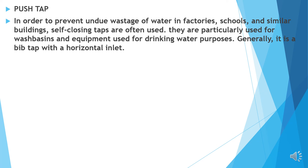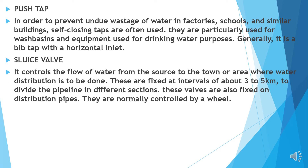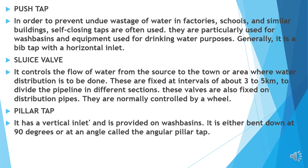Push tap: in order to prevent undue wastage of water in factories, schools and similar buildings, self-closing taps are often used. They are particularly used for washbasins and equipment used for drinking water. Generally it is a bib tap with a horizontal inlet. Sluice valve: controls the flow of water from the source to the town or area when water distribution is done. Fixed at intervals of 3 to 5 km to divide the pipeline in different sections; also fixed on distribution pipes and normally controlled by a wheel. Pillar tap: it has a vertical inlet and is provided on washbasins. It is either bent down at 90 degrees or at an angle, called an angular pillar tap.